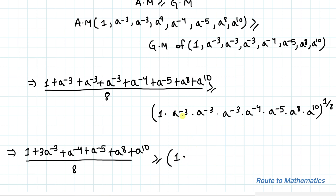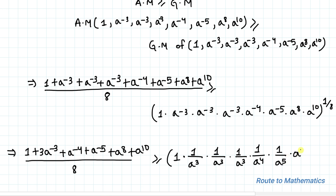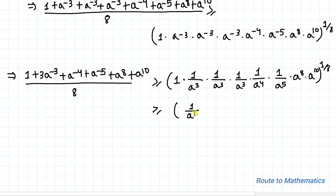This implies: 1 plus 3a^(-3) plus a^(-4) plus a^(-5) plus a^8 plus a^(10), divided by 8, is greater than or equal to 1 multiplied by (1/a^3) · (1/a^3) · (1/a^3) · (1/a^4) · (1/a^5) · a^8 · a^(10), all to the power of 1/8. We can write this as (1/a^(18)) · a^(18), all to the power of 1/8. These two cancel out.